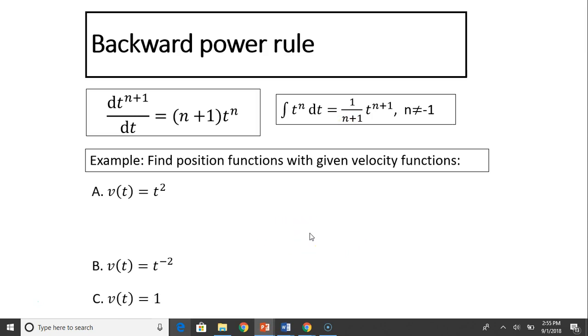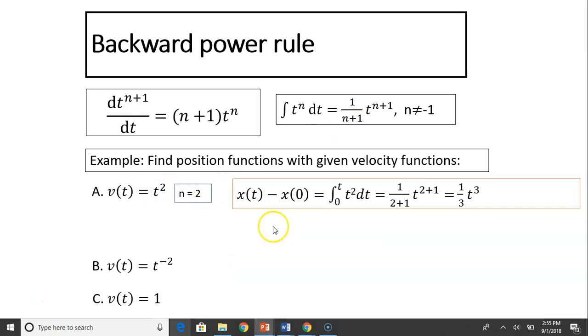Let's use that rule to find position function with given velocity functions. First one, velocity is t squared. What is the corresponding position function? So in this function, n equals 2 because it's t to the 2. So we plug into the equation x, remember x(t) minus x(0) equals the integral of v dt, right? Integral of v dt equals changing displacement.